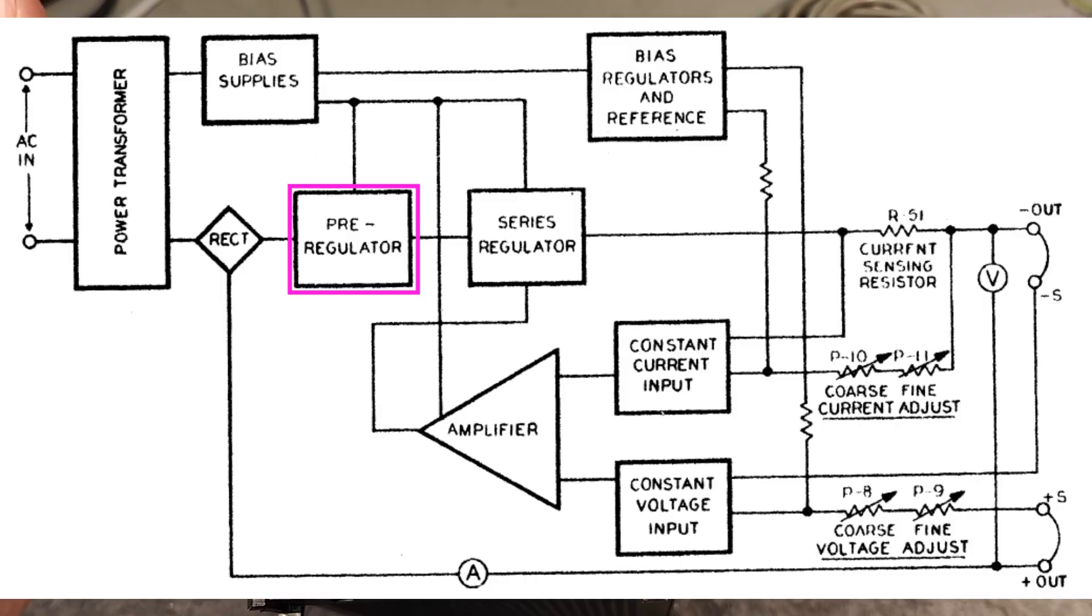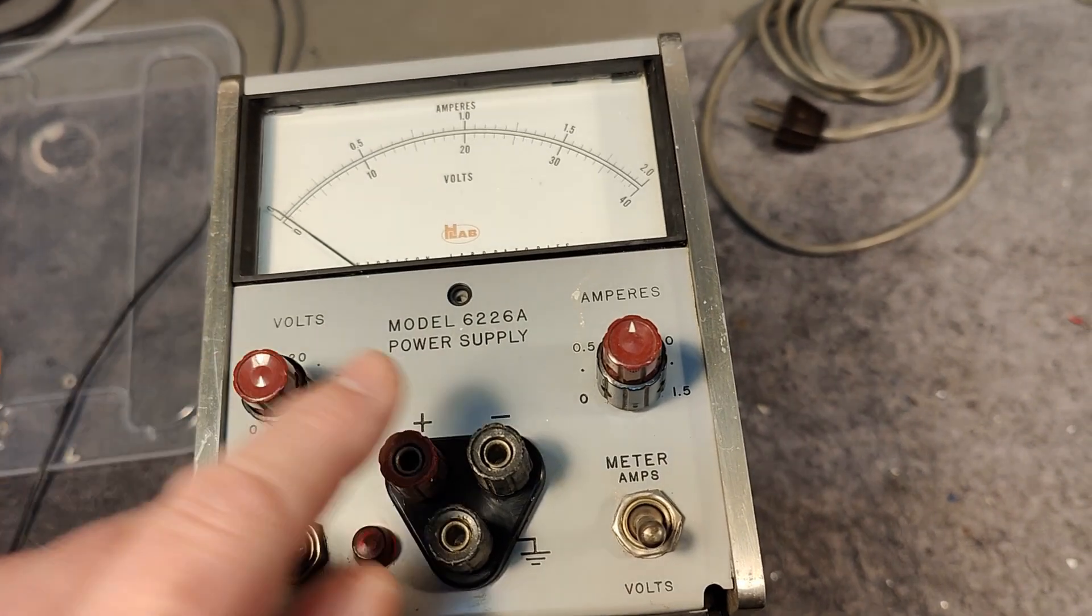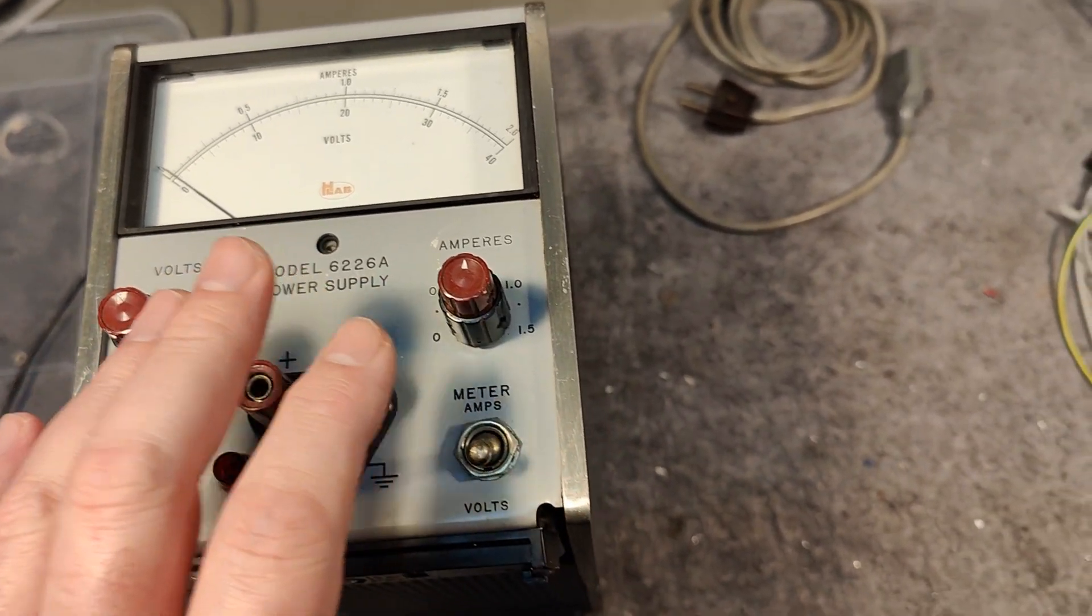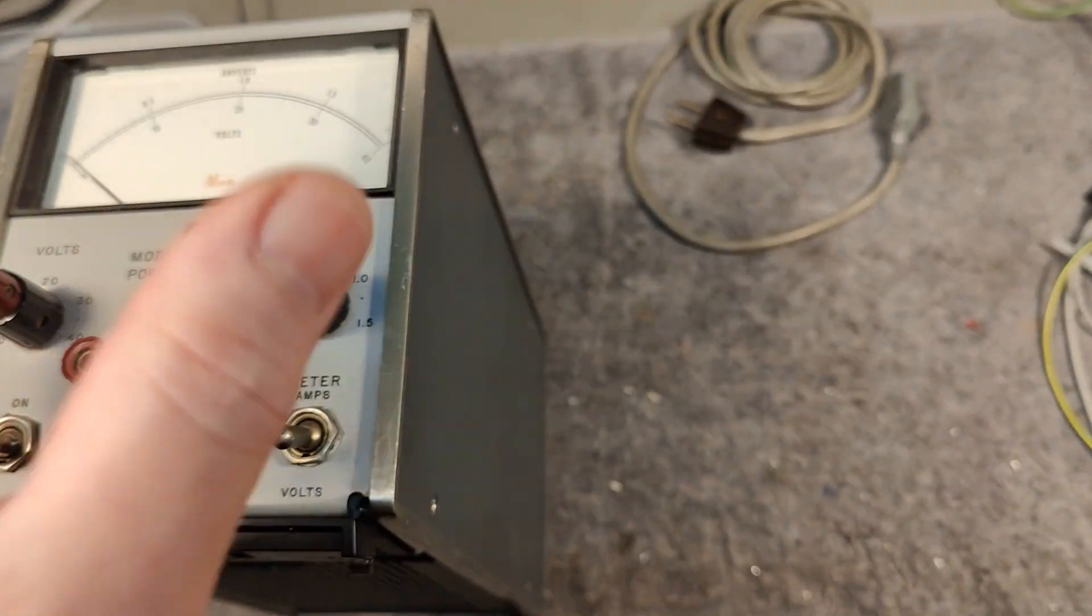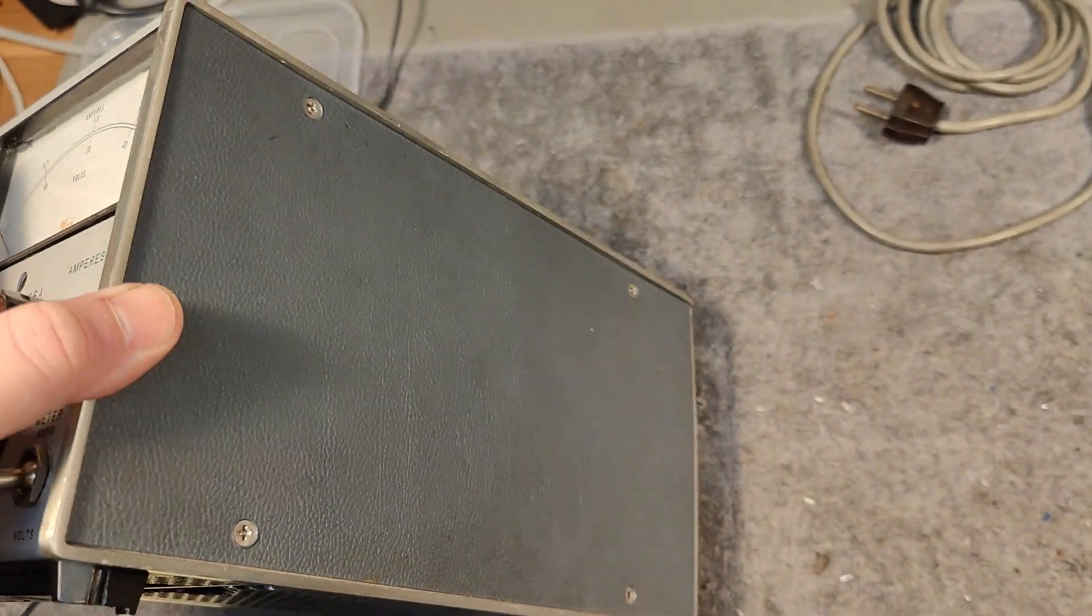There is a pre-regulator in this one and I believe this is an on-off or pulsed sort of switch mode pre-regulator, and then there is of course a linear regulator. That is why this model, this is the A model, there is not a fan in this one. The B model, there is a fan inside.